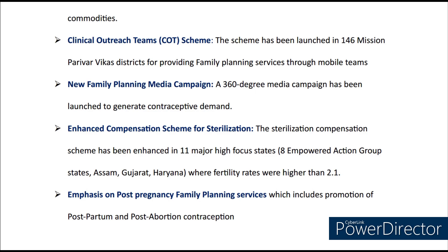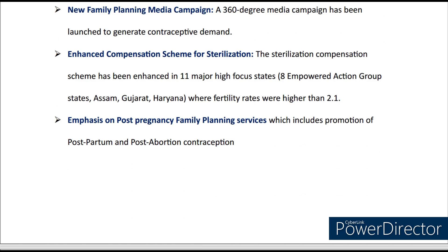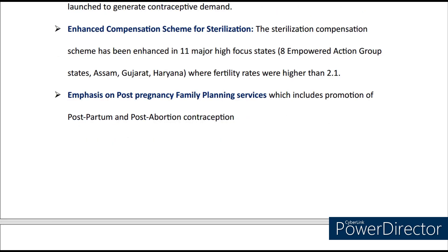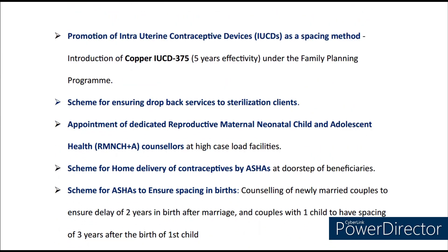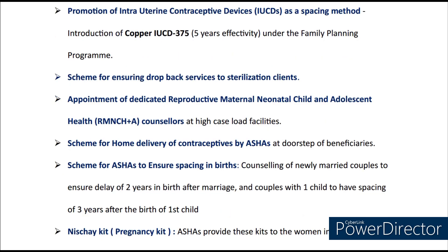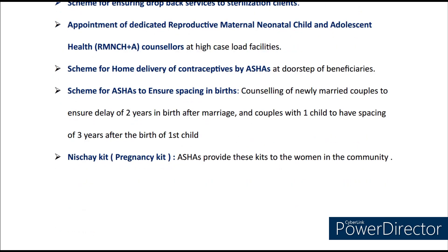Next is the enhanced compensation scheme for sterilization, enhanced in 11 major high-focus states where the TFR is more than 2.1. Next is emphasis on post-pregnancy family planning services, which include promotion of postpartum and post-abortion contraception. Next is promotion of IUCDs as a spacing method through introduction of Copper IUCD 375, which has 5 years' effectivity under the family planning program. Other schemes include ensuring drawback services to sterilization clients, appointment of dedicated RMNCH counselors, home delivery of contraceptives by ASHAs, spacing in births scheme, and last is the NISHE kit — a pregnancy kit provided by ASHAs to women in the community.